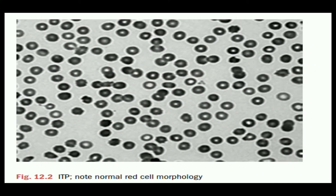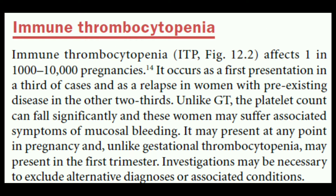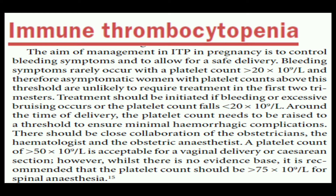Immune thrombocytopenia (ITP) affects 1 in 1,000 to 10,000 pregnancies. It occurs as a first presentation in one-third of cases and as a relapse in women with pre-existing disease in two-thirds. Unlike gestational thrombocytopenia, the platelet count can fall significantly and these women may suffer associated symptoms including mucosal bleeding. It may present at any point in pregnancy and, unlike gestational thrombocytopenia, may present in the first trimester. The aim of management of ITP in pregnancy is to control bleeding symptoms and to allow for safe delivery. Bleeding symptoms relatively occur with a platelet count of more than 20 × 10⁹/L; therefore, asymptomatic women with platelet counts above this threshold are unlikely to require treatment in the first two trimesters. Treatment should be initiated if bleeding or excessive bruising occur, or the platelet count falls below 20 × 10⁹/L.